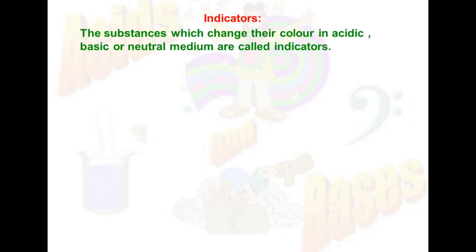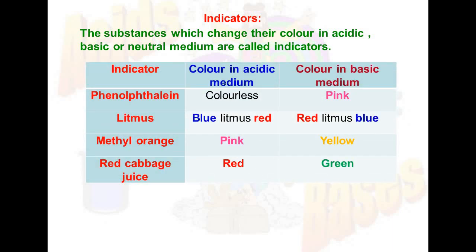Now the indicators. The substances which change their color in acidic, basic, or neutral mediums are called indicators. Here is an example of a table showing various indicators and their color in acidic and basic medium.